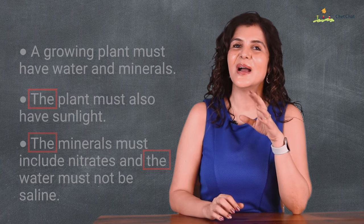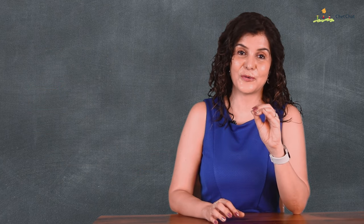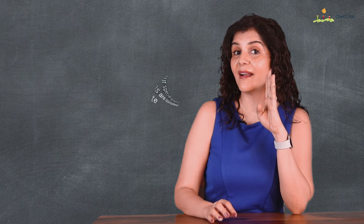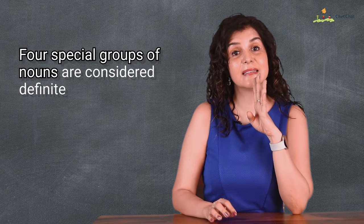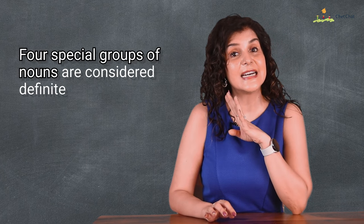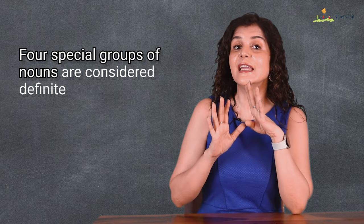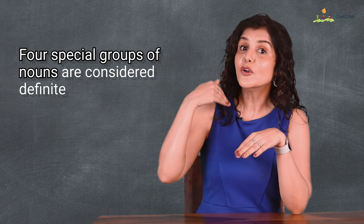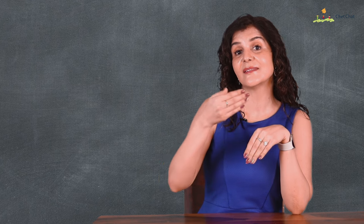Check this example: put some butter in an egg; now fold the butter with the egg. In the first case, an indefinite mention uses an for egg since it is a singular count noun beginning with a vowel, and no article for butter since it is uncountable. In the subsequent mention, the is correct for both count and non-count nouns: a growing plant must have water and minerals; the plant must also have sunlight; the minerals must include nitrates and the water must not be saline.